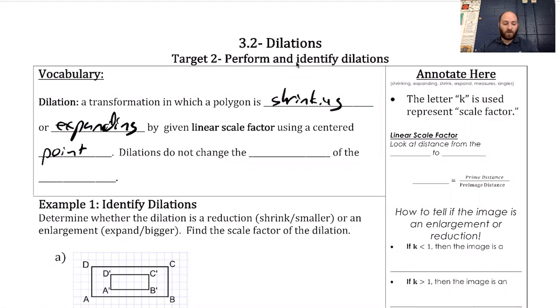This is a big difference from what we did before. When we did our rotations, translations, reflections, we retained the same size and shape. Those were rigid transformations. This is a non-rigid transformation.